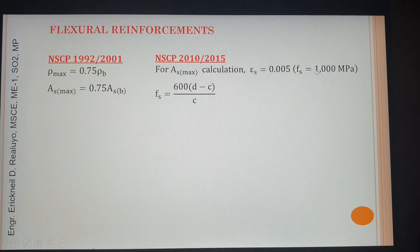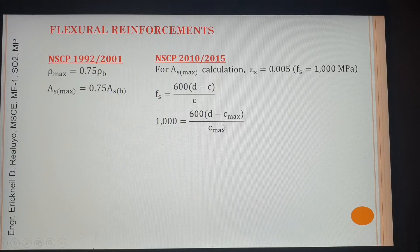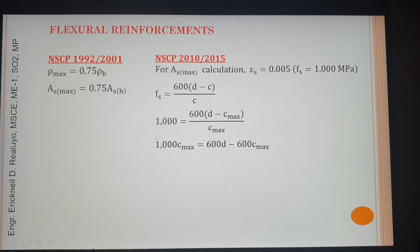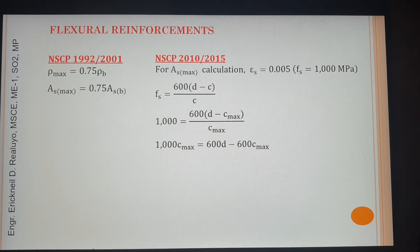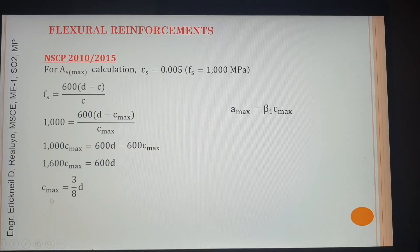This expression was derived from the strain diagram. When fs equals 1000, c becomes c_max. Cross-multiplying and distributing 600, then adding both sides — 600 plus c_max — and simplifying, this becomes 1/6. Then further simplifying c_max with 600, we arrive at the final expression.